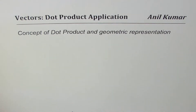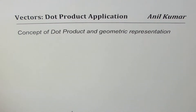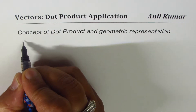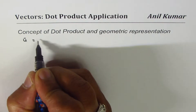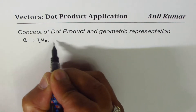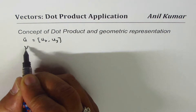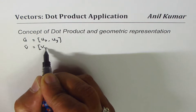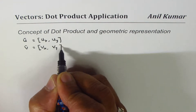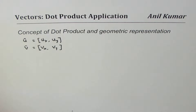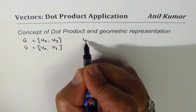I'm Alil Kumar sharing with you an excellent concept on dot product, thanks to my subscriber for asking a relevant question. The question is: let's say we have vector u written as (ux, uy) and vector v written as (vx, vy). For simplicity, I'm taking vectors in R2 as my example. The question is about what happens when we do the dot product.